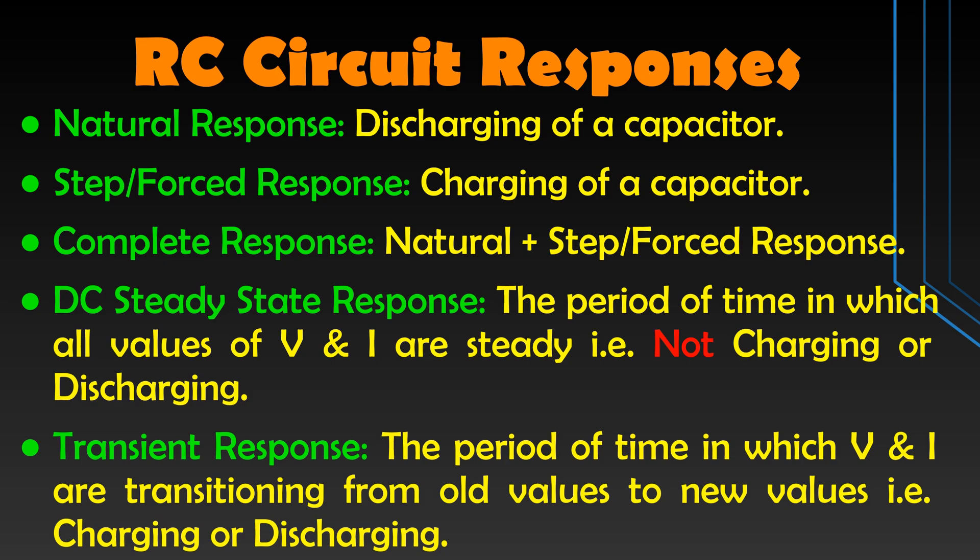Up next is the DC steady-state response. It is the response of an RC circuit in which the capacitor is fully charged or discharged and the values of voltage and current are stabilized and not changing with time. The last one is transient response — the response of an RC circuit in which the values of voltage and current are transitioning from old values to new ones, immediately after a change in the capacitor's state, which is the charging or discharging moment.